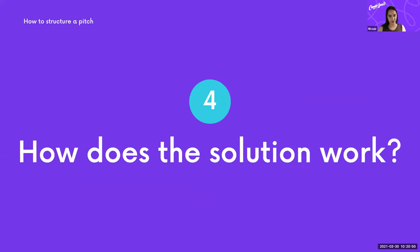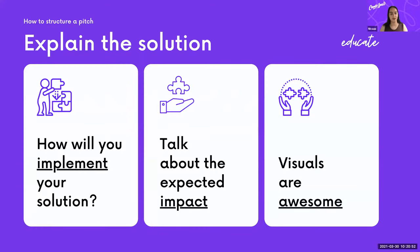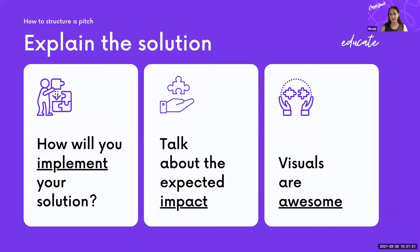Number four: how does the solution work? Talk about how you're actually going to implement it — what kind of team is involved, what technologies you're using, and the expected impact. Drop in some numbers: how much time are people going to save? Include some visuals. This is all about educating the person listening to your pitch so they get a good sense of what you've built.